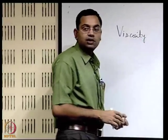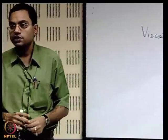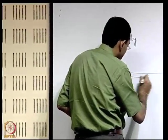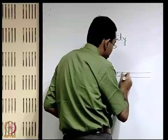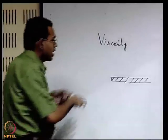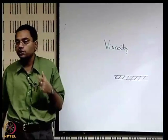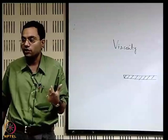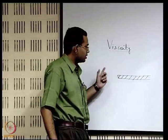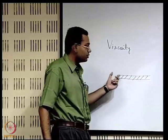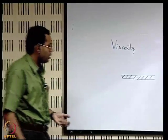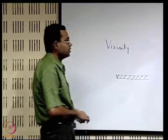We start by recalling the no-slip boundary condition discussed in the previous lecture. The consequence was that in many occasions the paradigm of no-slip — zero relative velocity between the fluid and the solid at points of contact, meaning the tangential velocity component — gives rise to a boundary condition at the fluid-solid interface known as the no-slip boundary condition.